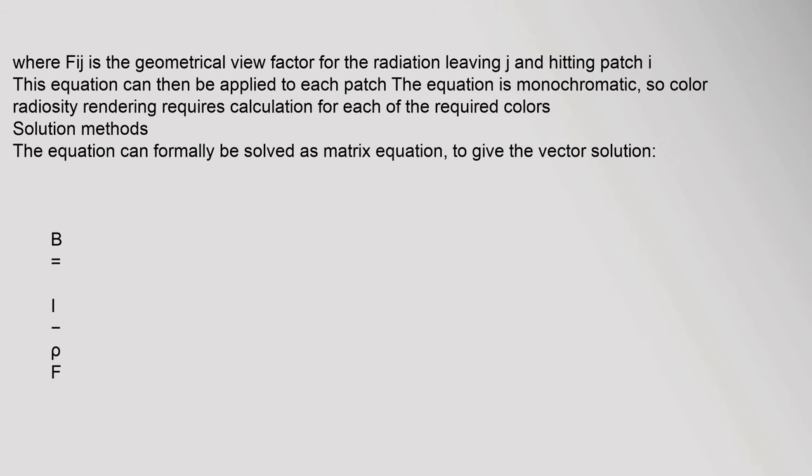Where F_ij is the geometrical view factor for radiation leaving j and hitting patch i. This equation can then be applied to each patch. The equation is monochromatic, so color radiosity rendering requires calculation for each of the required color channels. Solution methods: The equation can formally be solved as a matrix equation to give the vector solution B = (I - ρF)⁻¹ E.